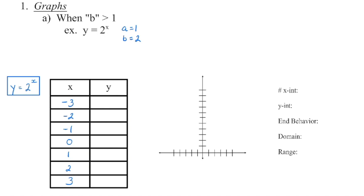I've got a table of values here, and we can choose any values we like for x, substitute them in, and generate a y value. I picked these values so my graph doesn't need to extend too far left or right. In the first one, we're going to figure out what y is when x is negative 3. We know from previous years that if we have a negative exponent, we reciprocate the base of the power, and the exponent becomes positive. 1 to the power of 3 is just 1, 2 to the power of 3 is 8. So when x is negative 3, y is 1 eighth — that's our first coordinate to plot.